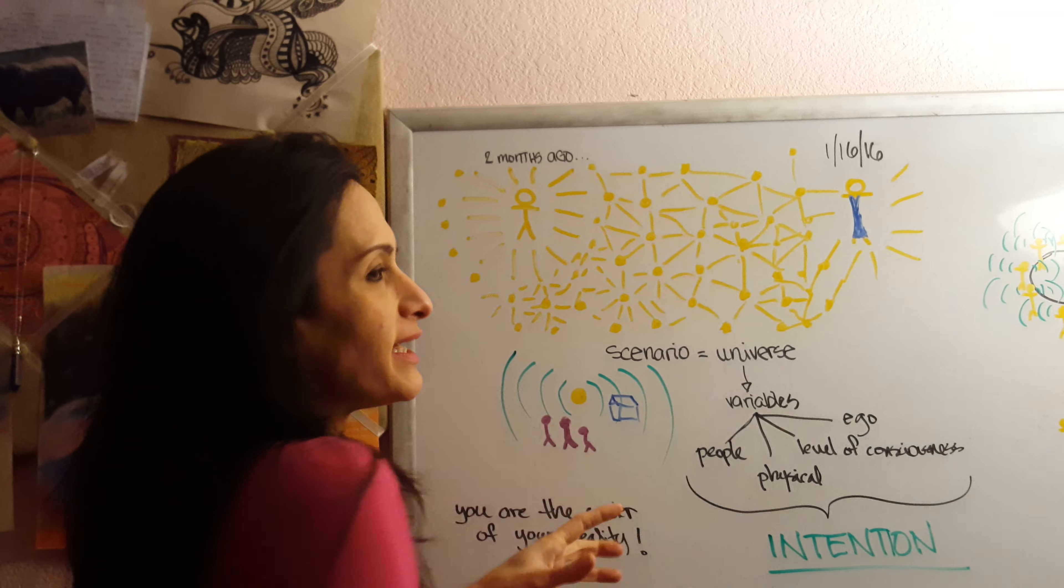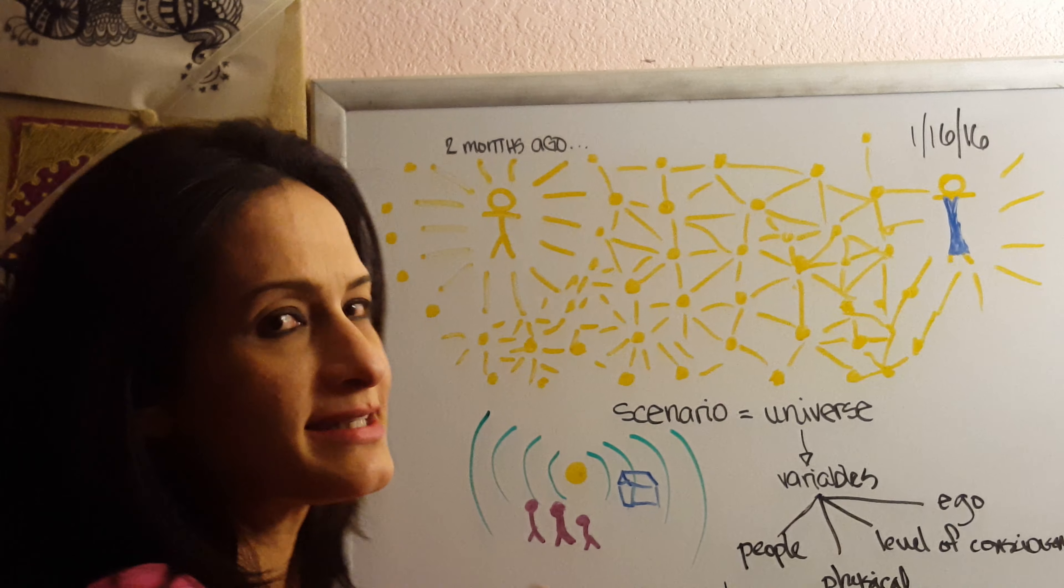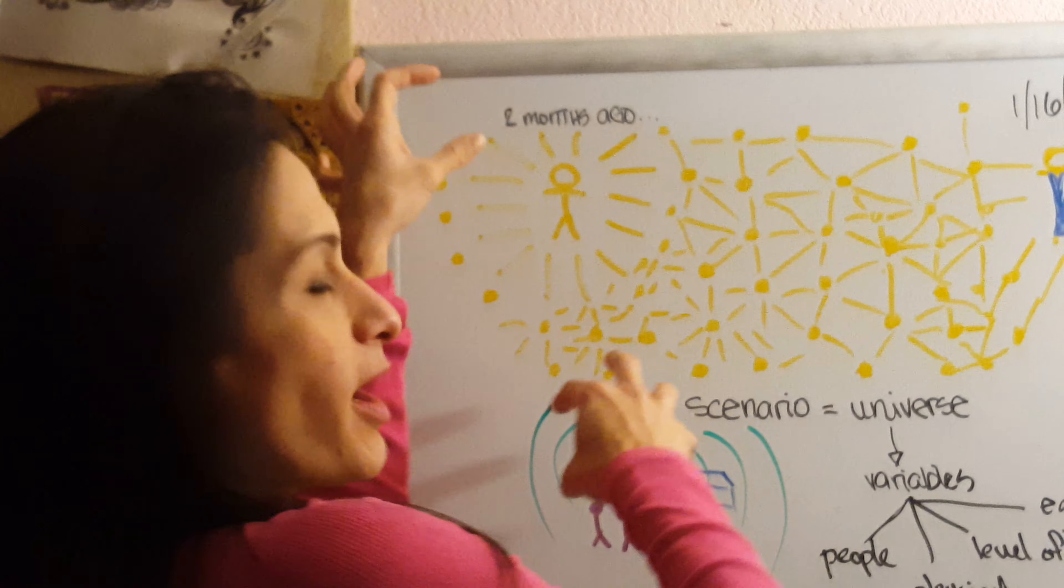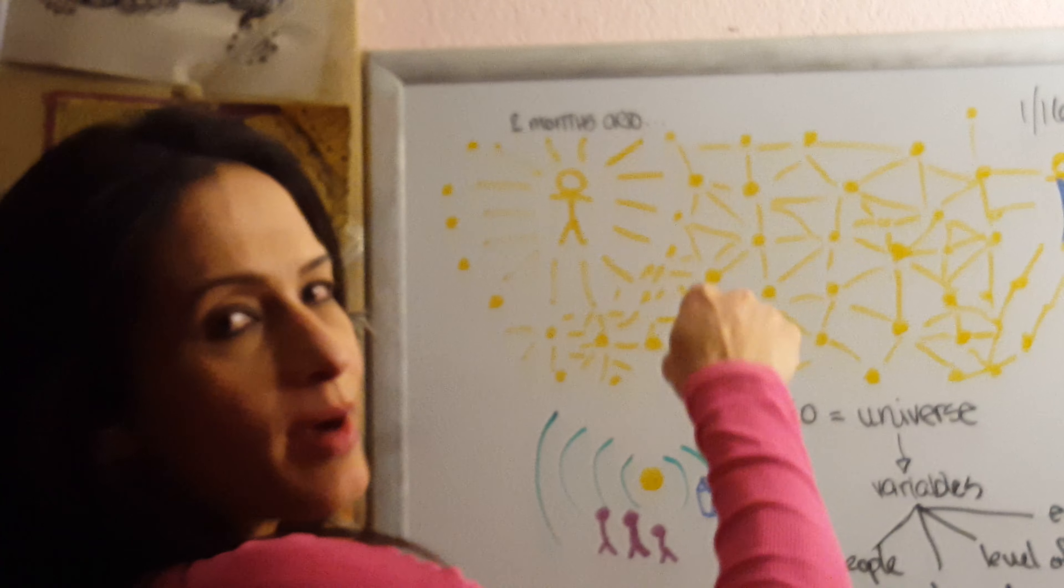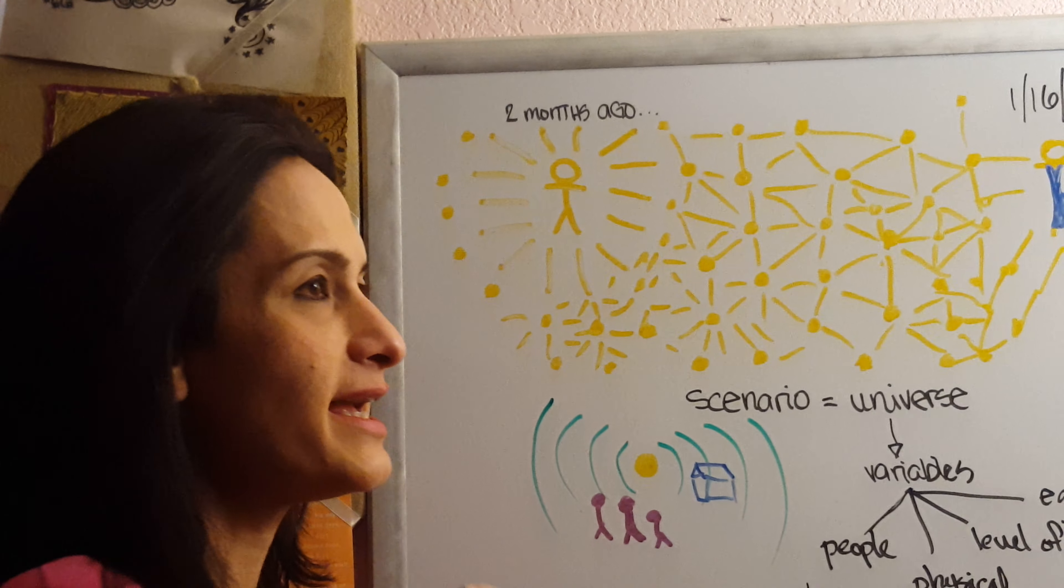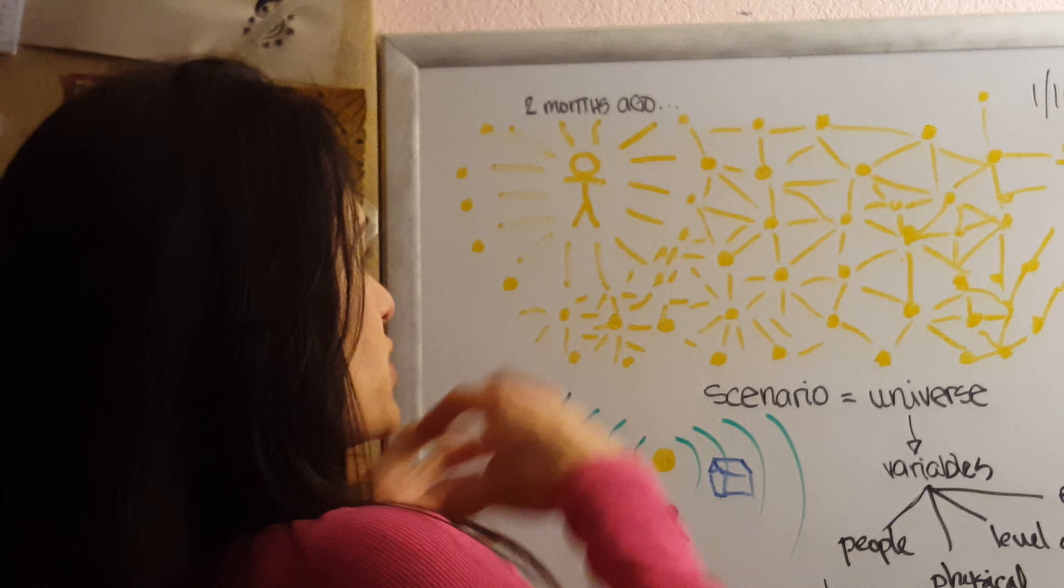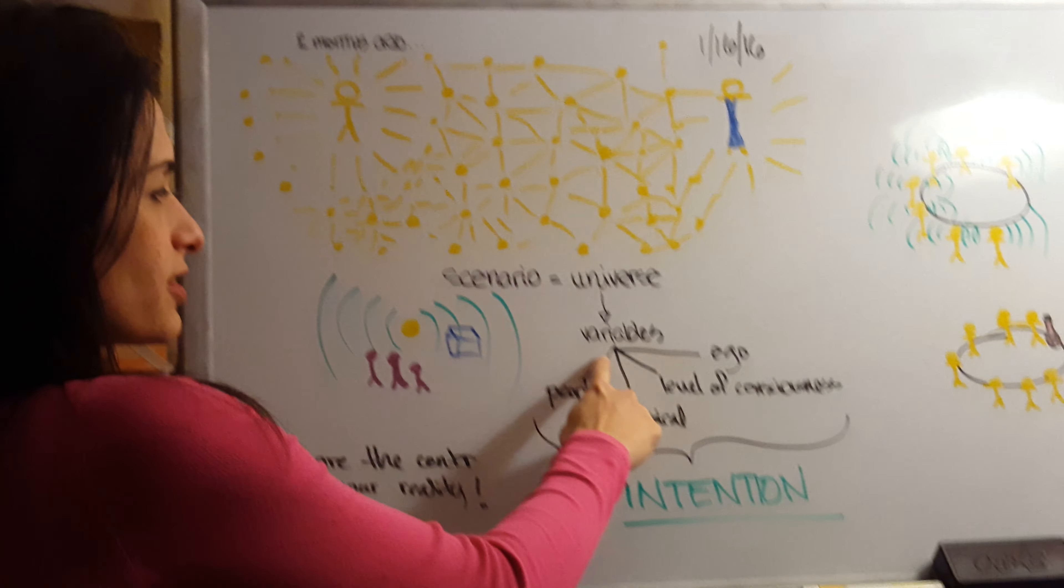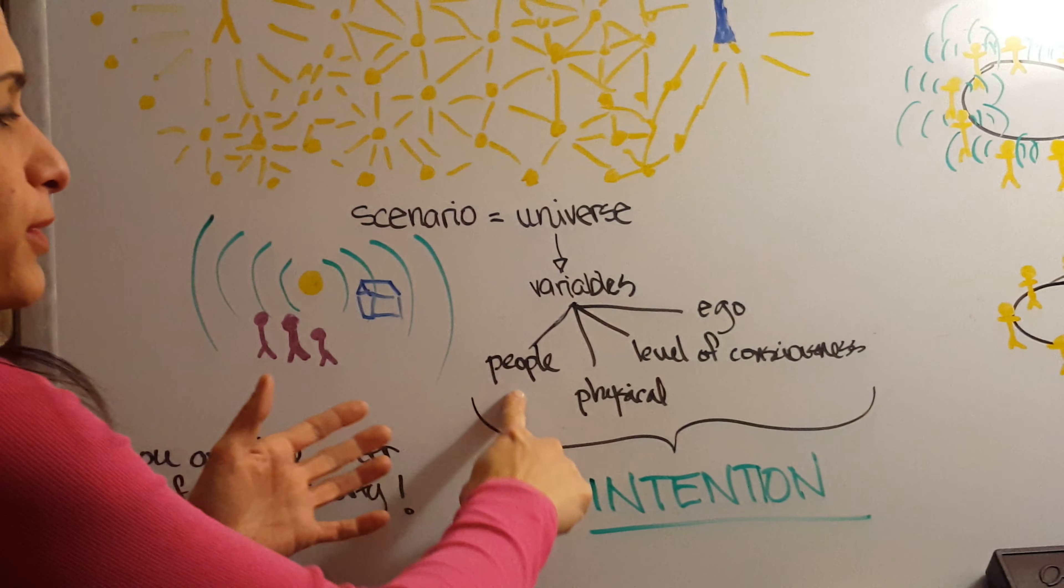Every single point of my moments right now, my now has a lot of different possibilities and every single possibility is already created. So think of it as right now I am in this universe, which is made up of different variables right here.